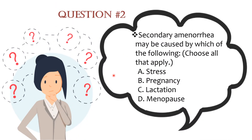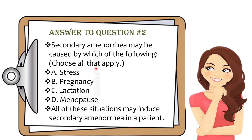Quiz question: Secondary amenorrhea may be caused by which of the following? Choose all that apply: stress, pregnancy, lactation, and menopause. The correct answer is all of the above — stress, pregnancy, lactation, and menopause — as all of these situations may induce secondary amenorrhea in a patient.